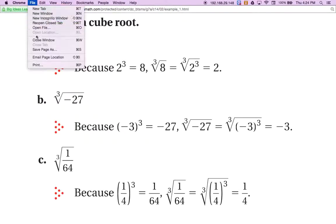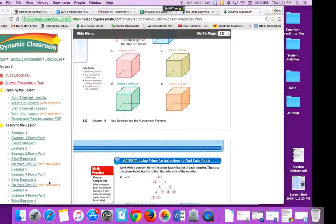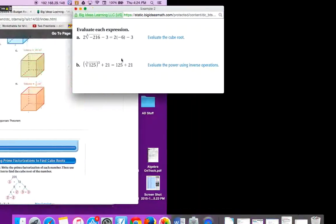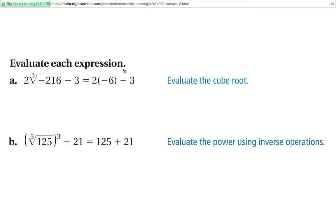Alright, that's the first part. Part number 2. Example 2. Same idea doing your order of operations that go through this. The cube root. So we have 2 multiplied by the cube root of negative 216 minus 3. So in the first one we do the cube root, the exponent piece. The cube root, which is negative 6. 2 times negative 6 is negative 12. Minus 3 is negative 15.